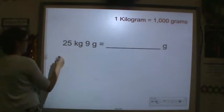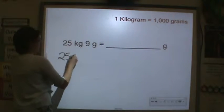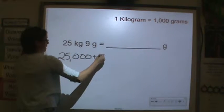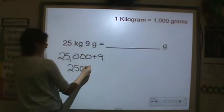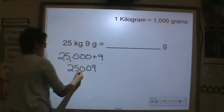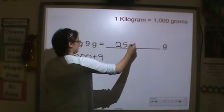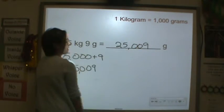25 kilograms plus 9 grams. So 25 times 1,000 plus 9 equals 25,009 grams.